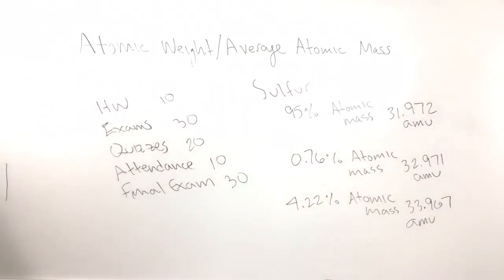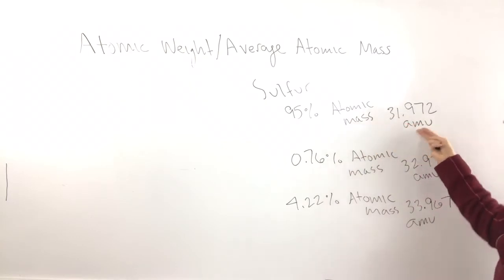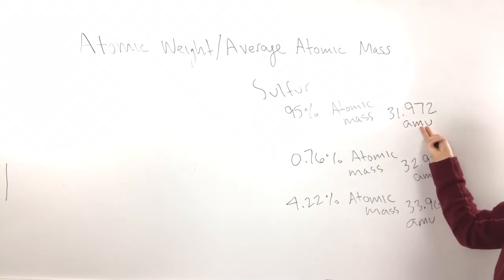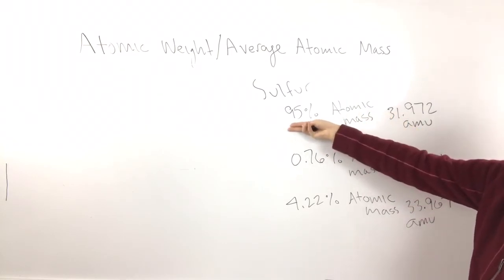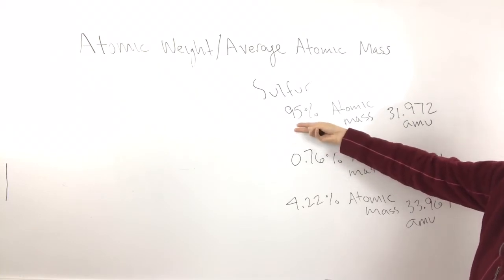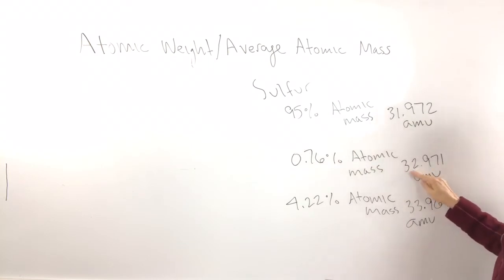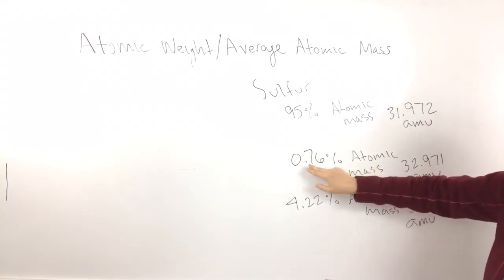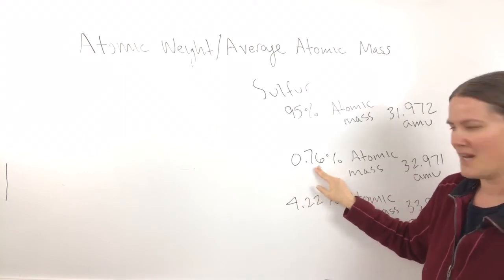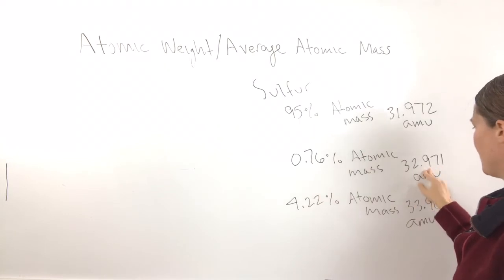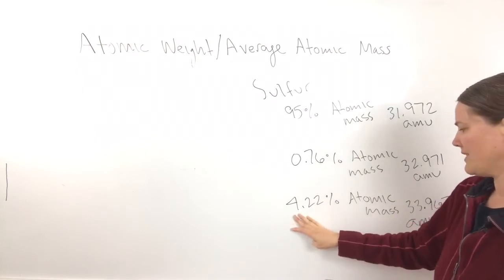To calculate this, we multiply the atomic masses by the decimal form of the percent. So we multiply 31.972 by 0.95 — make sure to use the decimal, not ninety-five. Then multiply 32.971 by 0.0076, because 0.76 percent divided by 100 gives you 0.0076. And multiply 33.967 by 0.0422. Divide each percent by 100 to get the decimal you multiply the atomic mass by.